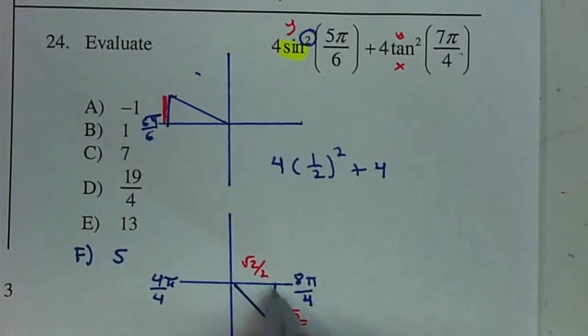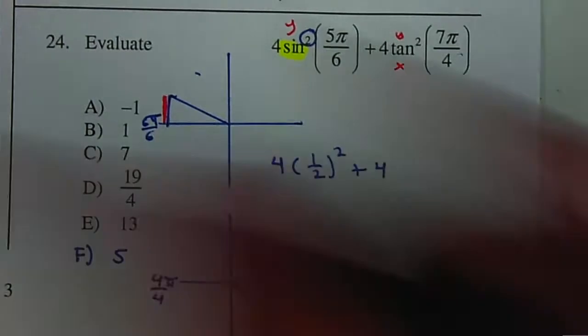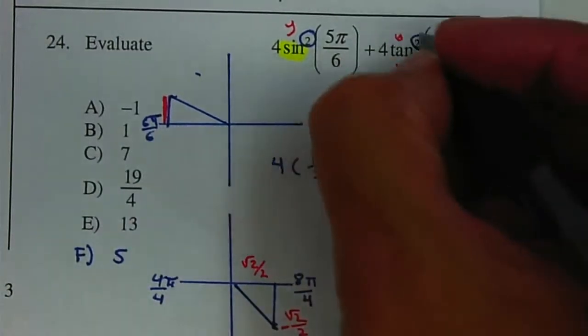So therefore, since they both are the same, it will be negative divided by positive, negative 1. And don't forget about your square once again.